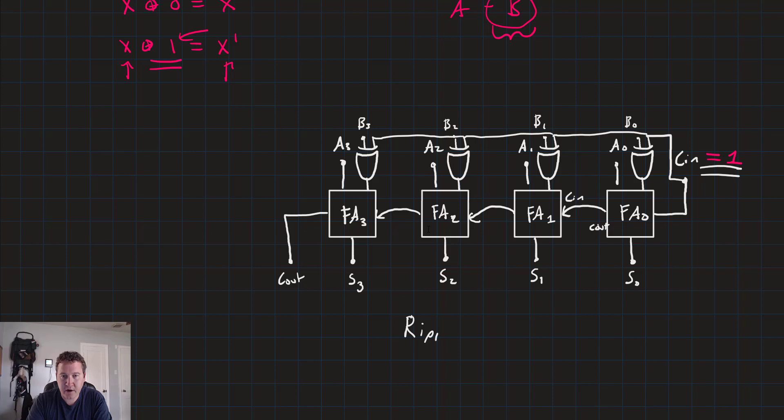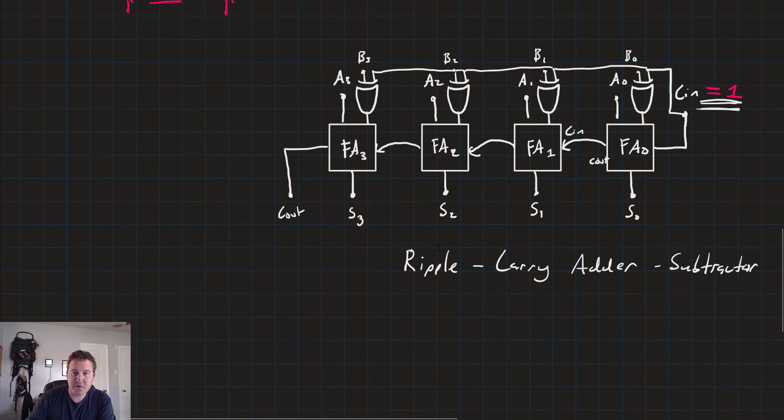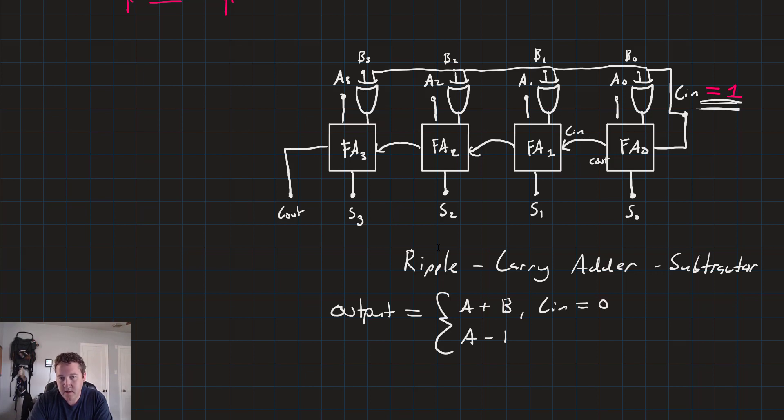This is our ripple carry adder subtractor and that's what we wanted to do. So it's really simple. By just adding some XOR gates to the inputs on B and using the carry in to be our 1 or 0 if we want to add, we're able to have a circuit that does addition and subtraction. So we might say something like this. The output is equal to A plus B when CN equals 0 and A minus B when CN equals 1. That's all there is to the binary adder subtractor. Just add XOR gates on the B inputs and use CN to select between addition and subtraction.